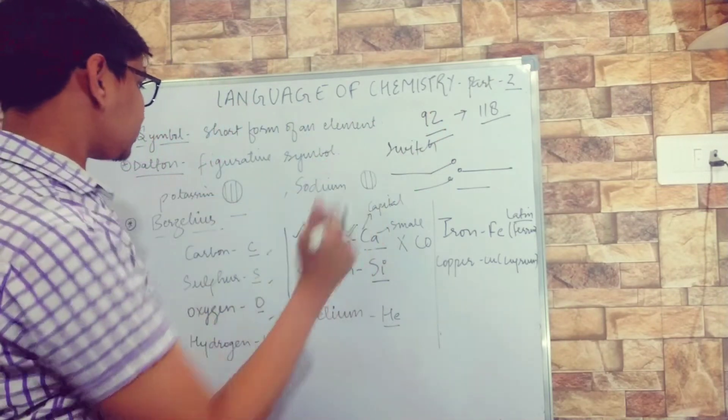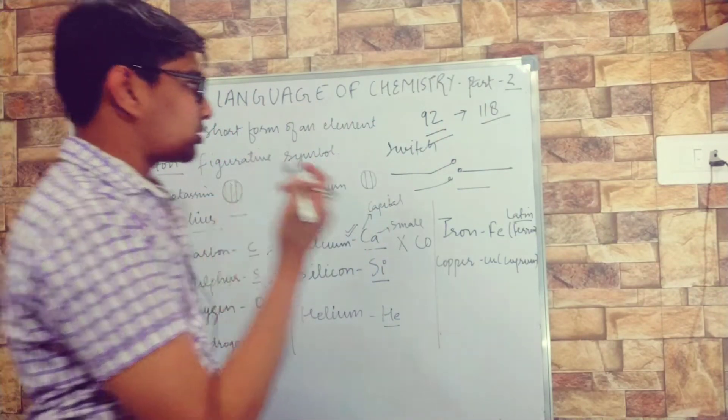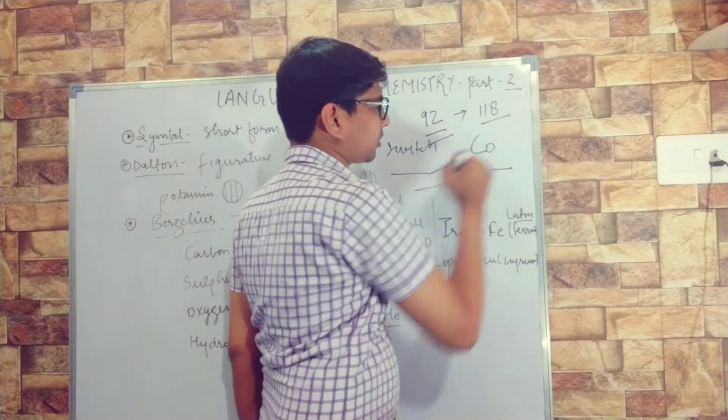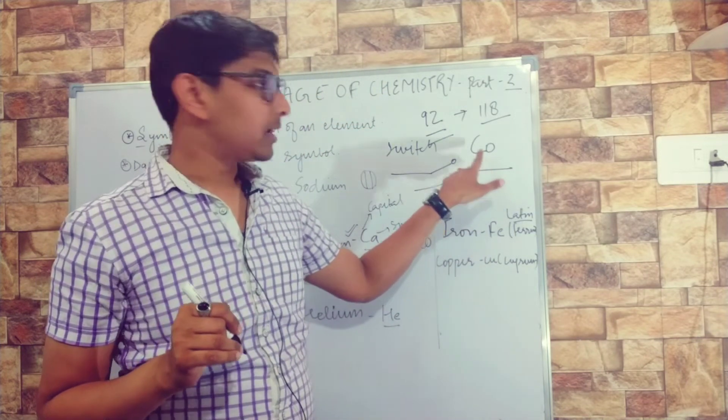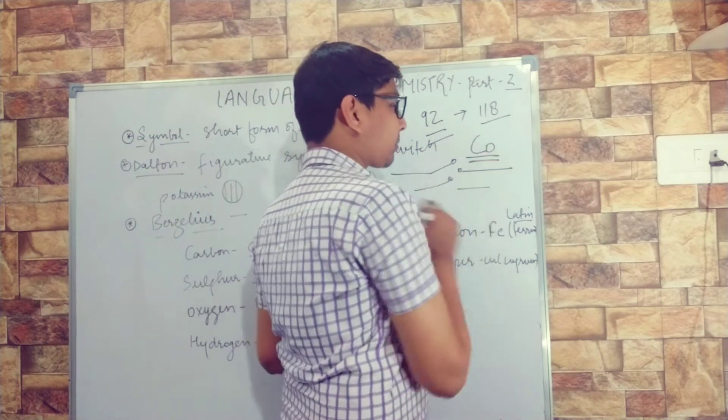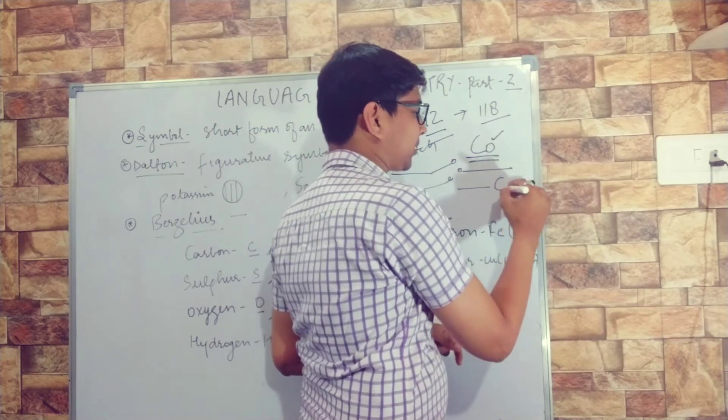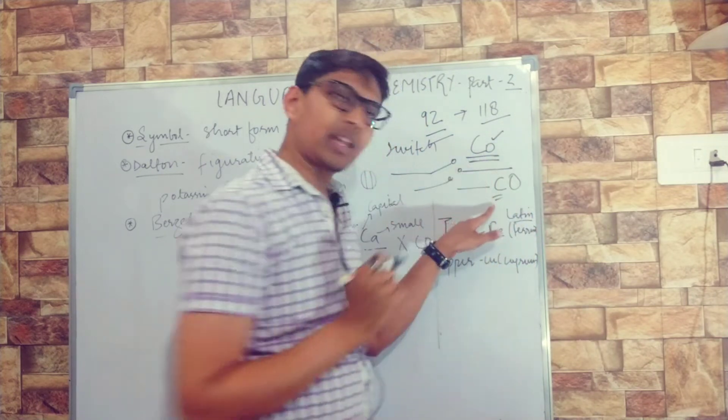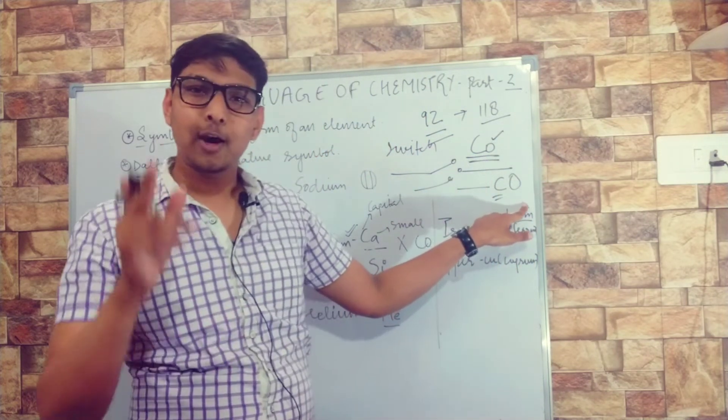For example, I have to write Co - this Co with capital C and small o is the symbol of cobalt. But if we write both as capital, C and O, C will remain as carbon and O will be considered as oxygen.